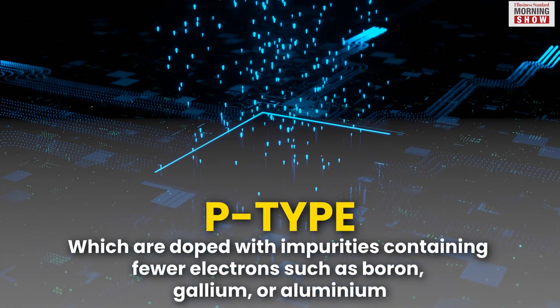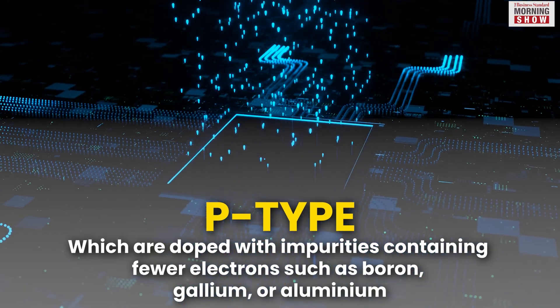which are doped with impurities containing fewer electrons such as boron, gallium, and aluminium.